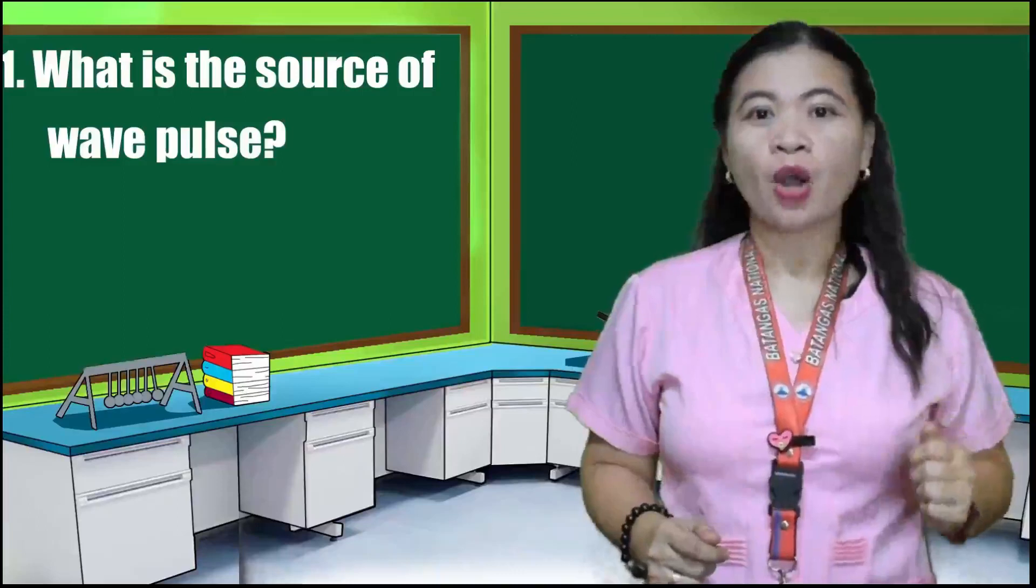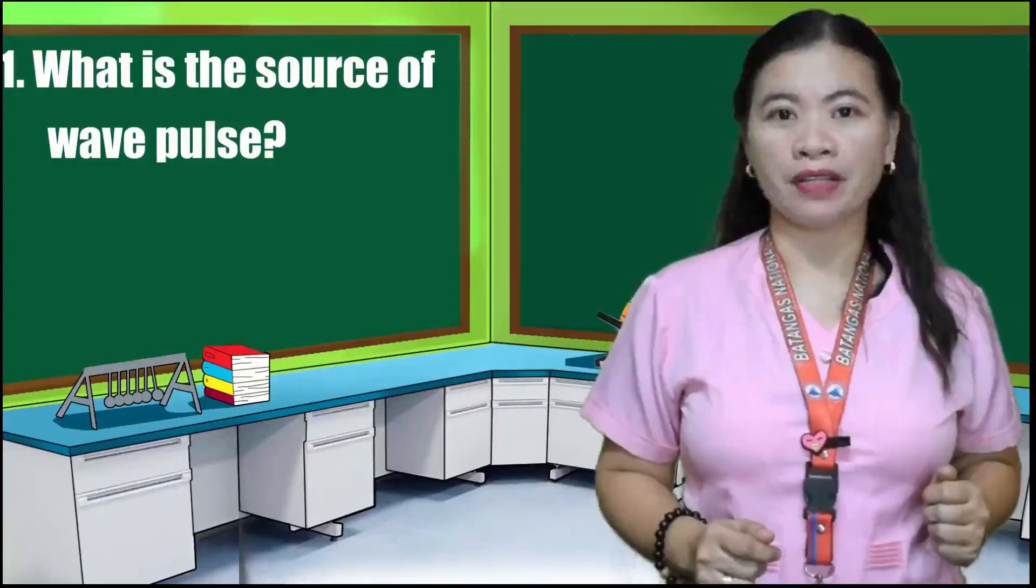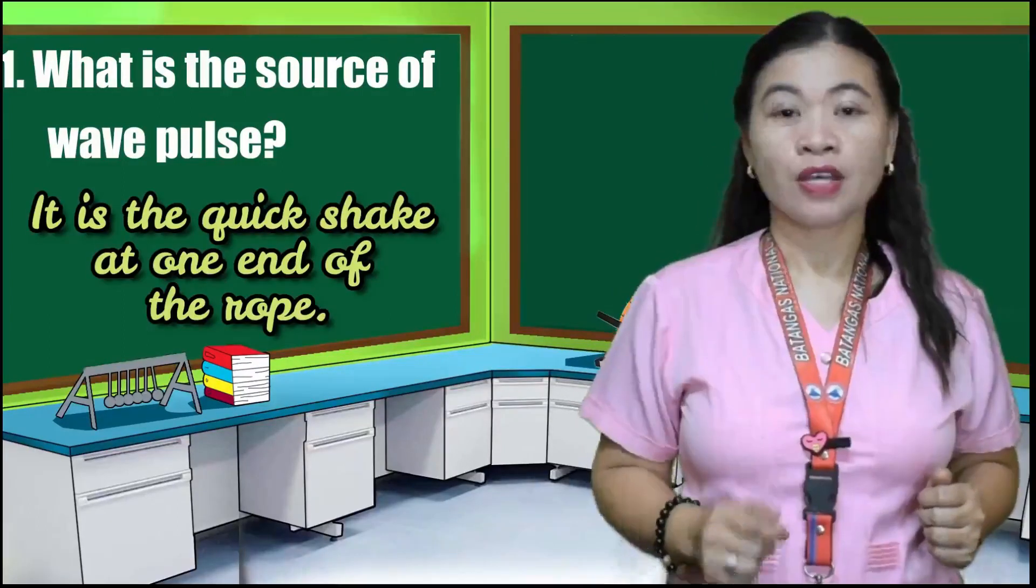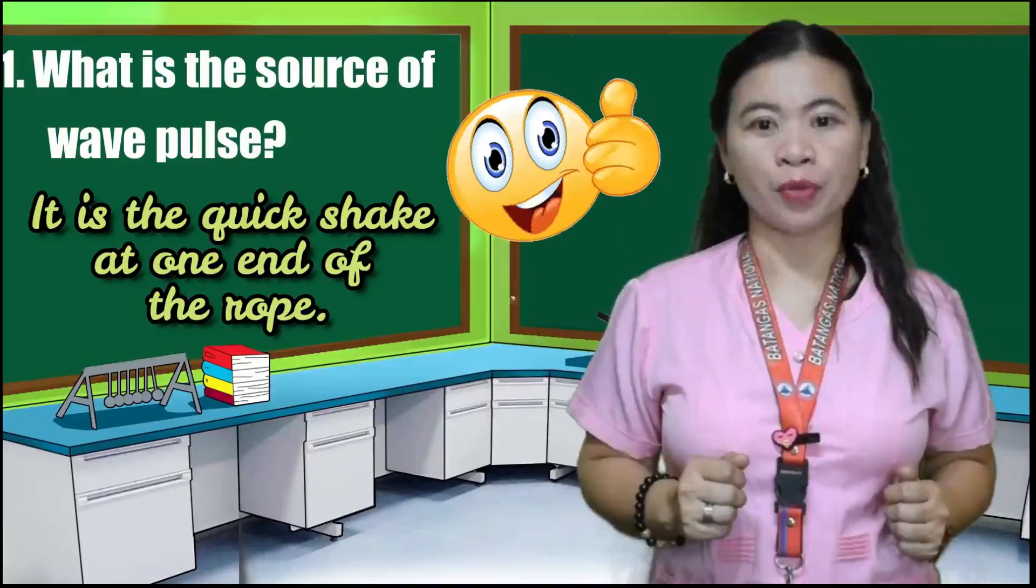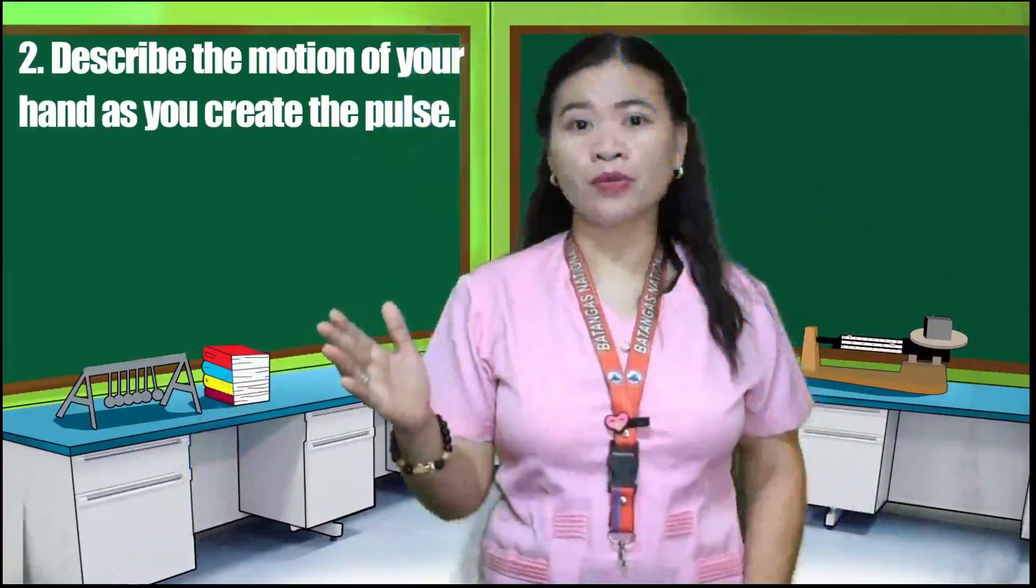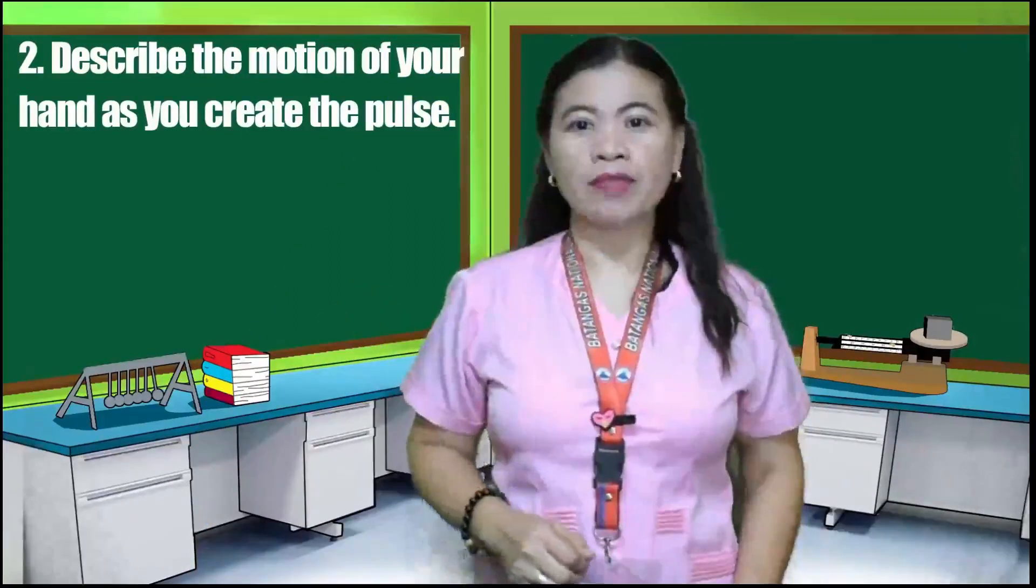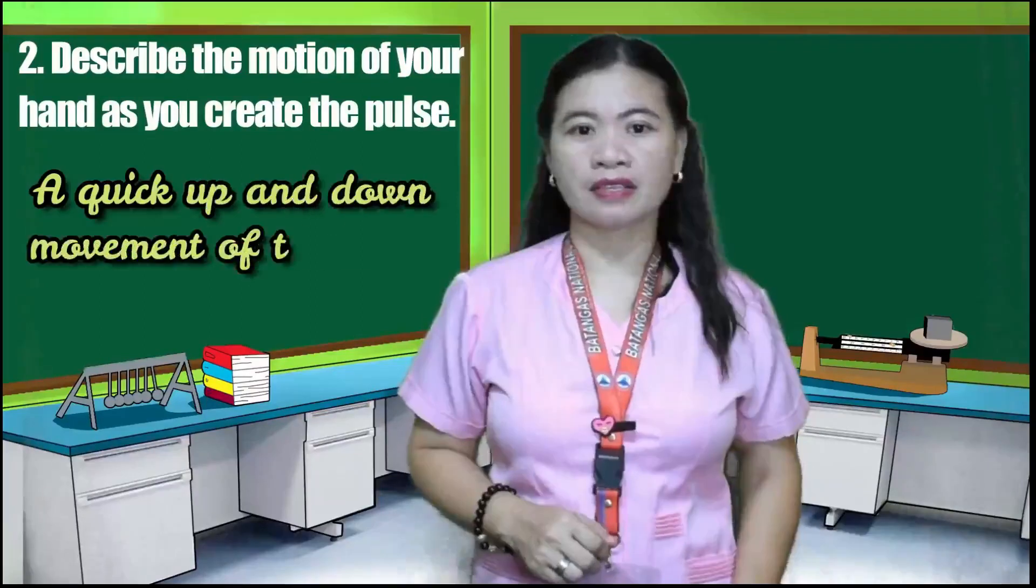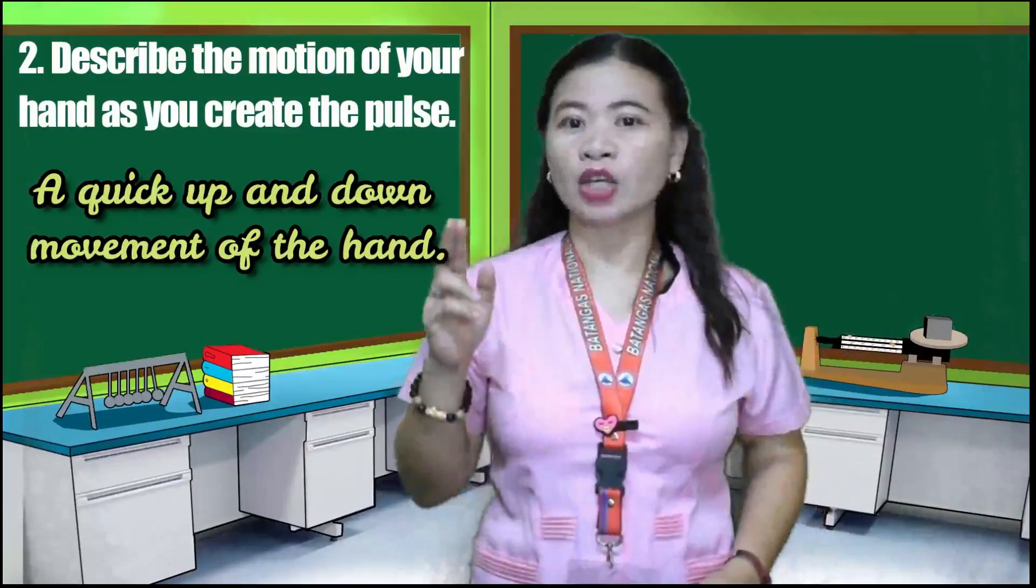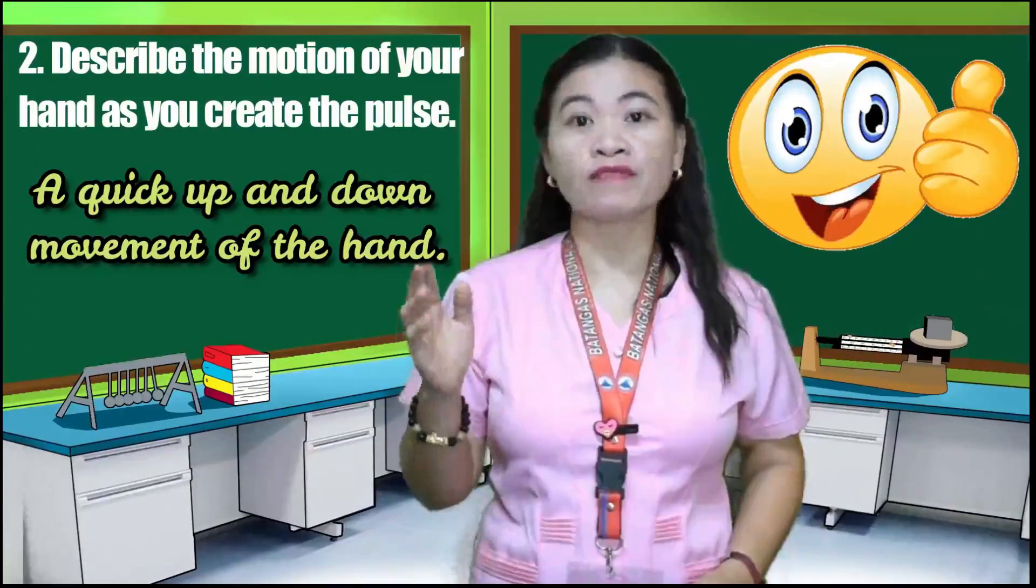Number one, what is the source of the wave pulse? Correct. It is the quick shake of one end of the rope. How about number two? Describe the motion of your hand as you create the pulse. Very good. It is a quick up and down movement of the hand.